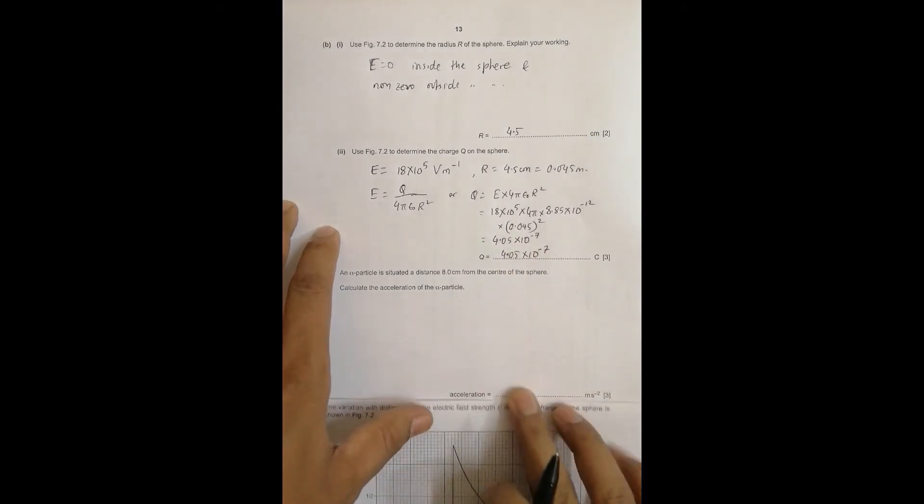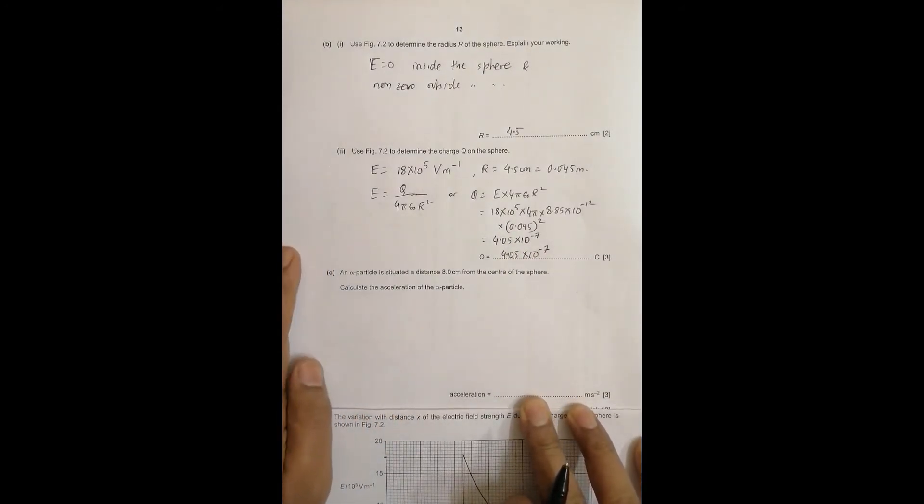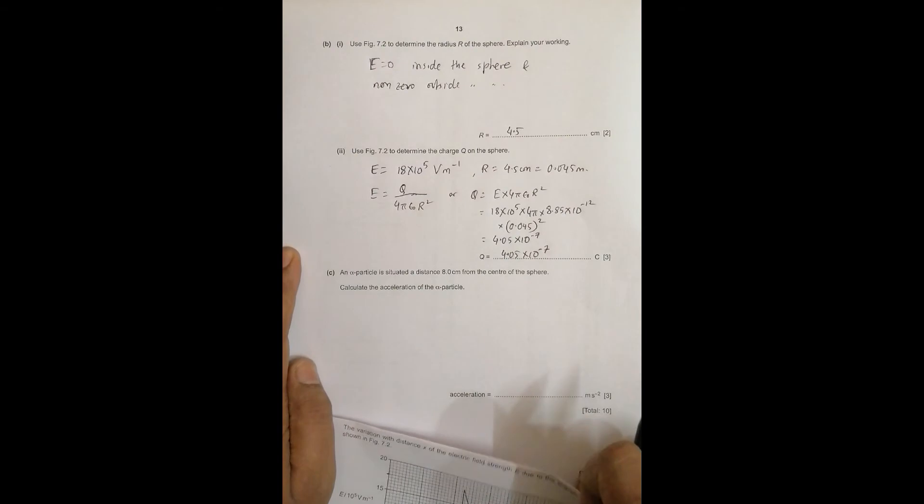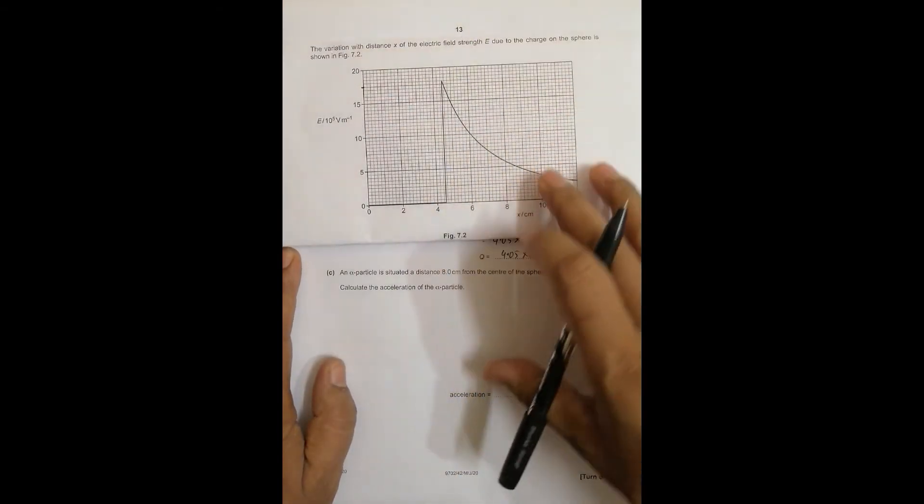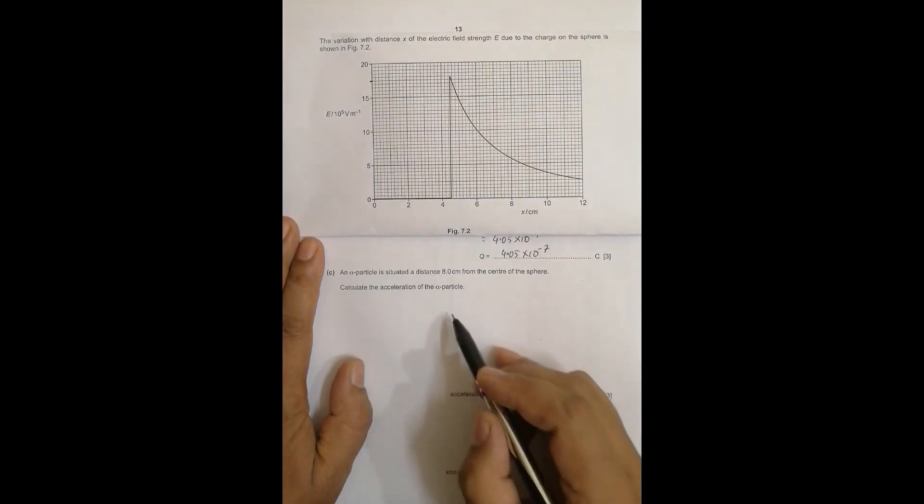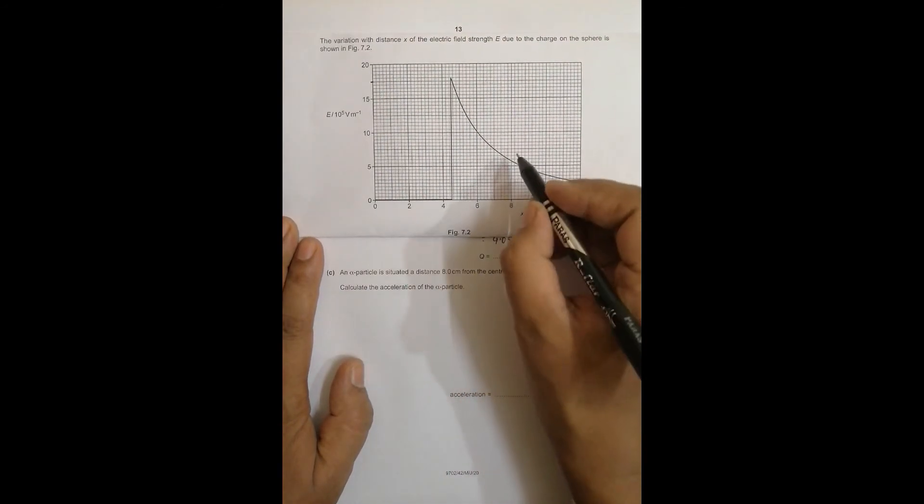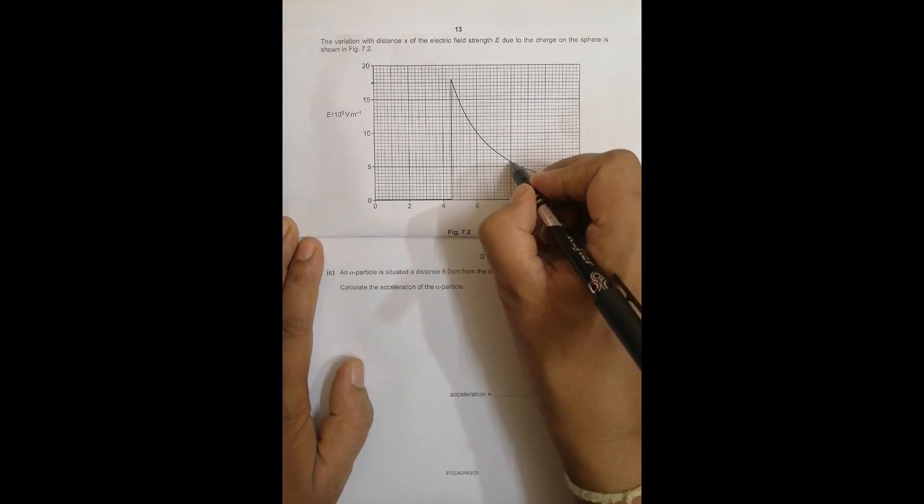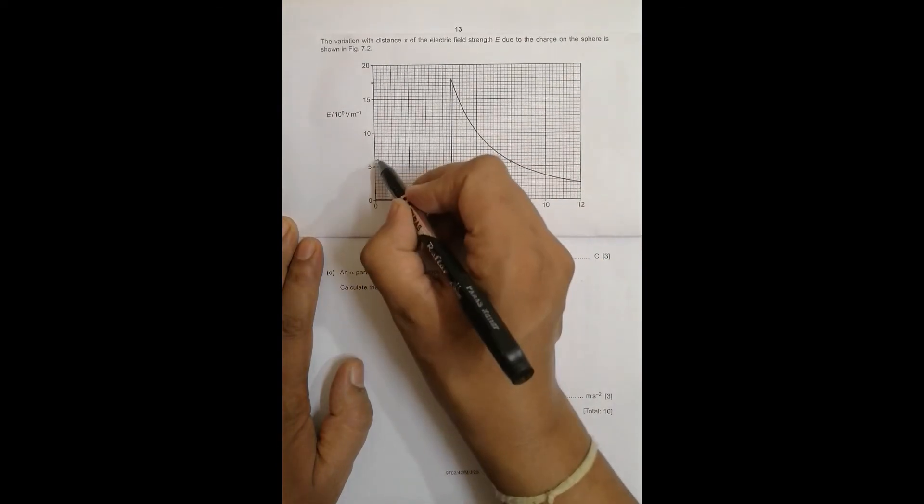Now an alpha particle is situated a distance 8 cm from the center of the sphere. Calculate the acceleration of the alpha particle. At 8 centimeter the value of E is this, so this comes to this.